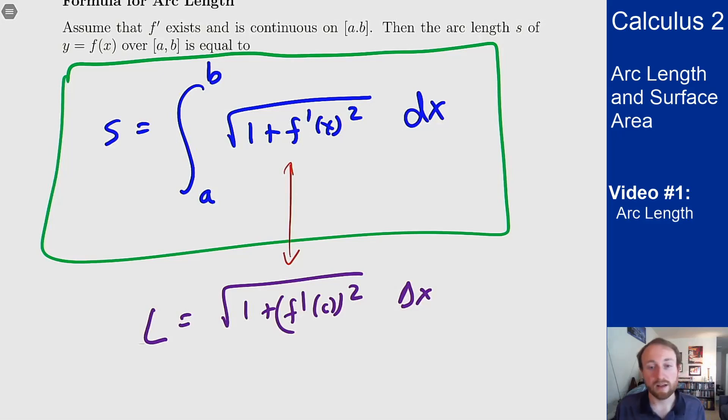A key thing to realize is because this is a square root and it's tough inside a square root, this can be hard to integrate. There are a lot of functions where it's not really easy to integrate this to actually figure what the arc length is. You may have to resort to numerical integration.